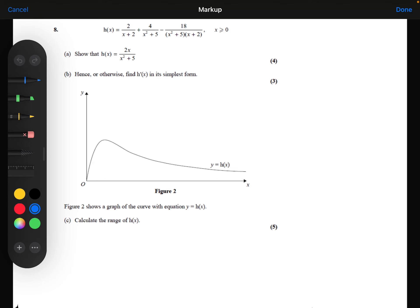So we're getting a common denominator. The first fraction, I'm going to times by x squared plus 5. The second fraction, I'm going to times by x plus 2.